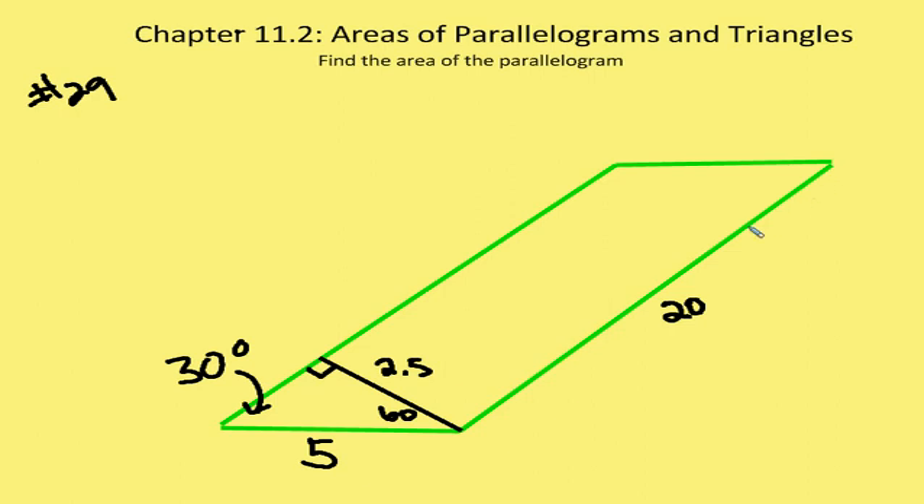Now, one of the other things that the book gives to us is that the length of one of the sides of the parallelogram is 20. So now we have essentially one of the bases, which is 20, times the height, which is 2.5. And that leaves us with an area of 50 units squared.